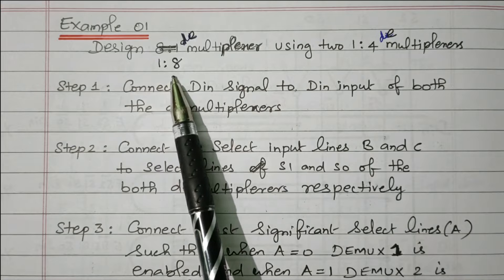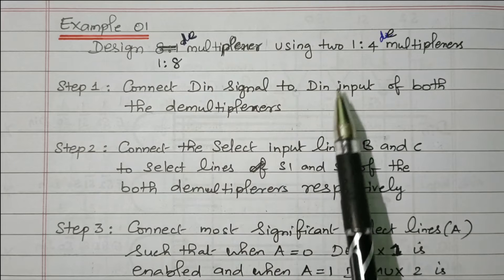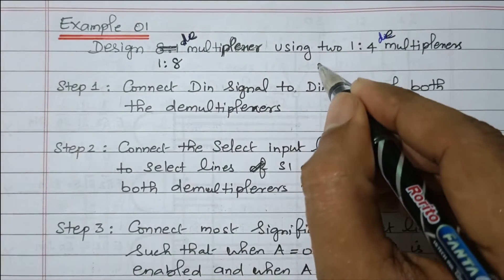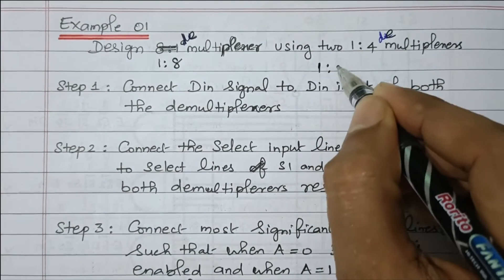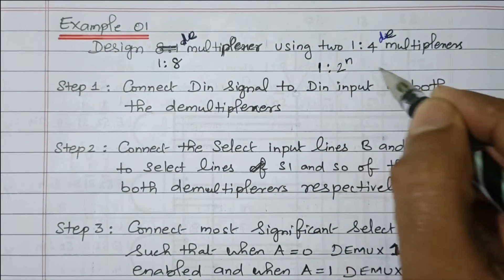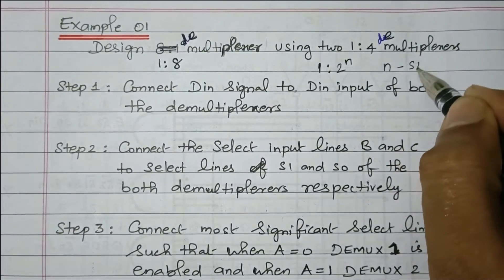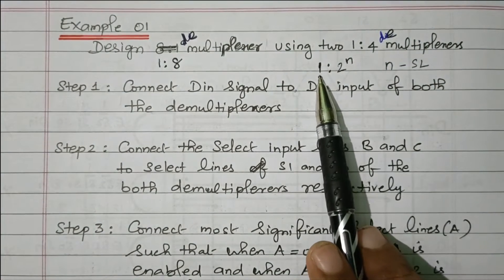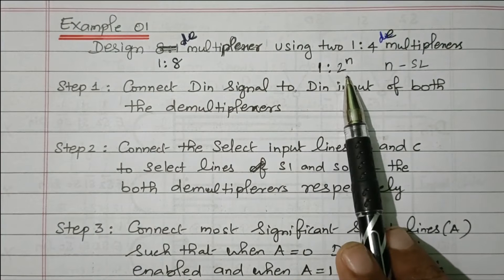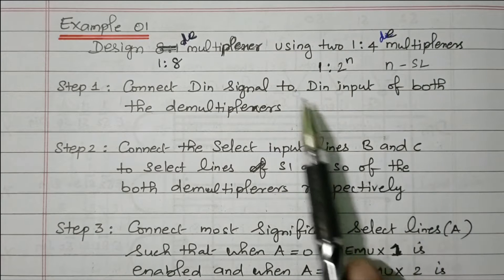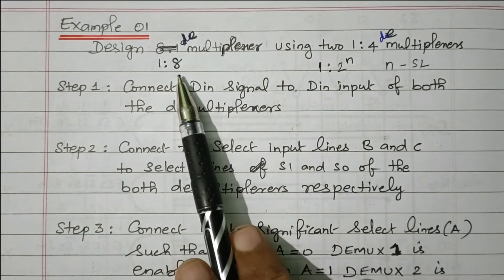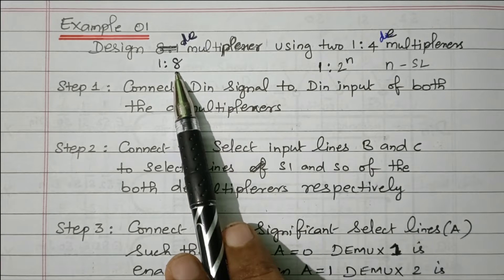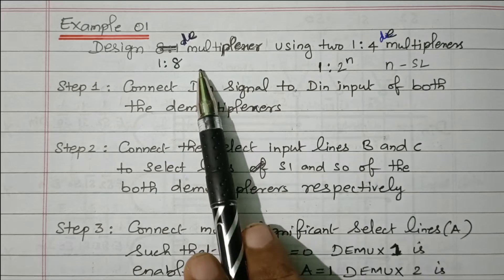We need to design the 1-to-8 demultiplexer using two 1-to-4 demultiplexers. A demultiplexer is a device having only 1 input, 2-to-the-power-n outputs, and n number of selection lines. This is the basic structure of the demultiplexer. For a 1-to-8 demux, n is 3, giving 2^3 = 8 outputs and 3 selection lines.